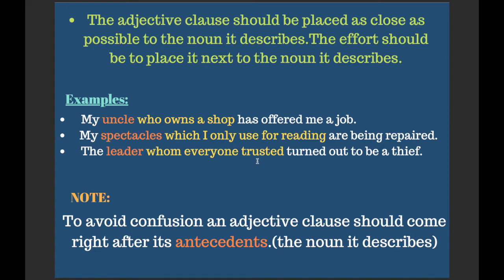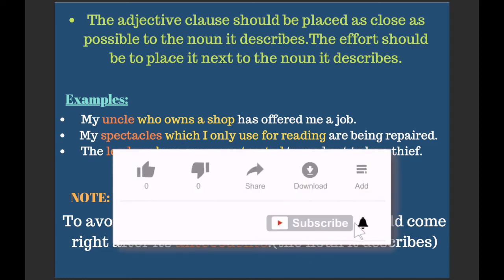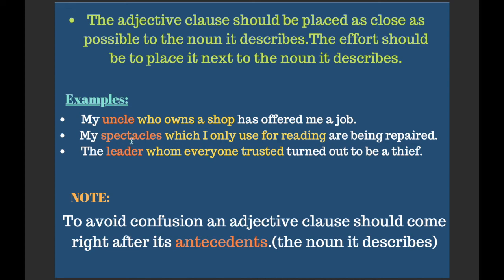In the third example, 'The leader whom everyone trusted turned out to be a thief' — the noun is 'leader' and the adjective clause is 'whom everyone trusted.' Asking 'which leader?' gives the answer 'whom everyone trusted.' The main clause is 'The leader turned out to be a thief,' and 'whom everyone trusted' is the subordinate adjective clause. In all three examples, framing the question 'which' along with the noun gives the subordinate clause as the answer.